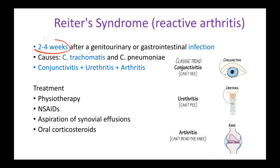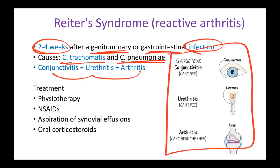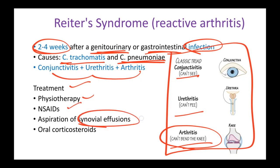Reactive arthritis occurs two to four weeks after another infection, usually chlamydia — specifically Chlamydia trachomatis and Chlamydia pneumoniae — which causes genitourinary or gastrointestinal infections. The triad is conjunctivitis, urethritis, and arthritis. Treatment includes physiotherapy to relax the joints, NSAIDs for pain control, aspiration of synovial effusions if fluid has built up, and oral corticosteroids to decrease overall inflammation.